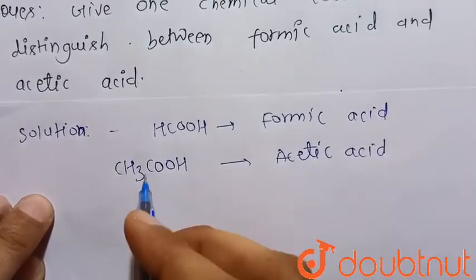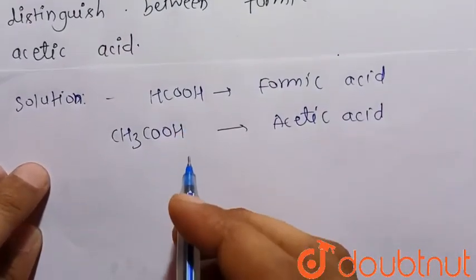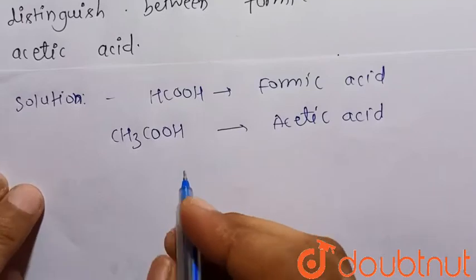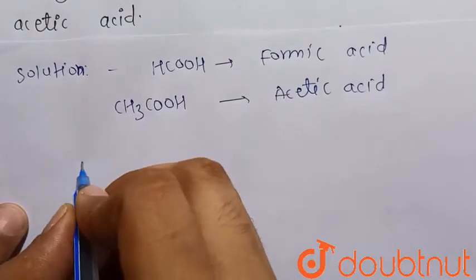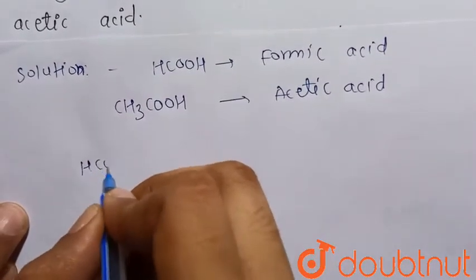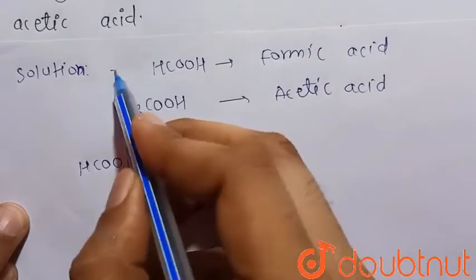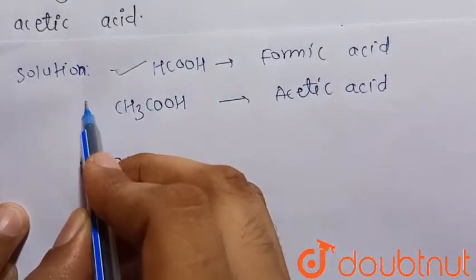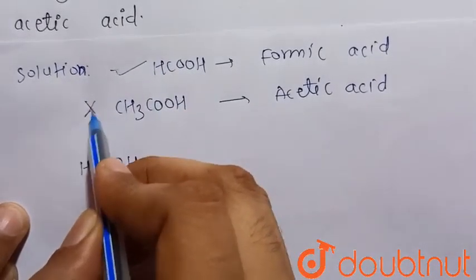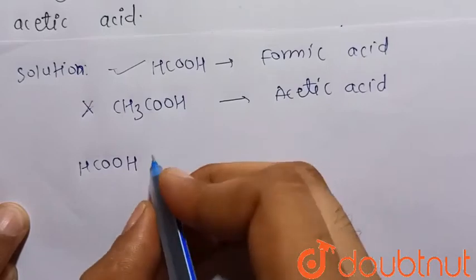We know that these can be distinguished by the Tollens' test, because formic acid gives a positive Tollens' test, but acetic acid gives a negative Tollens' test — that is, it does not give a positive Tollens' test.